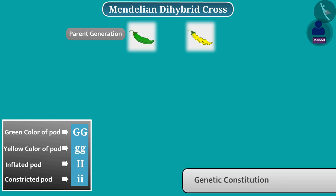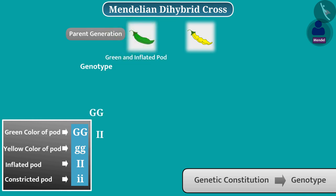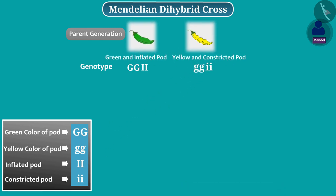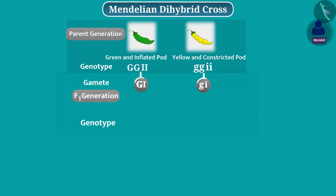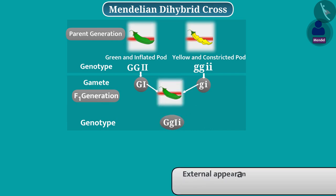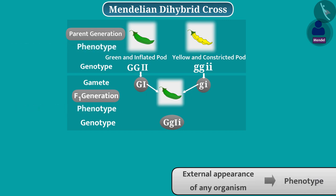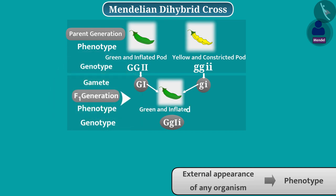The genetic constitution of any organism is called its genotype. The genotype of the parent with green and inflated pod is like this, and the genotype of the parent with yellow and constricted pod is like this. Since both parents have the same alleles for two characters, there is formation of only one type of gamete in each parent. Therefore, the genotype of offspring formed by fusion of these two gametes would be like this. The external appearance of any organism is called its phenotype. The phenotype of plants of F1 generation will have green color and inflated shape of pods.